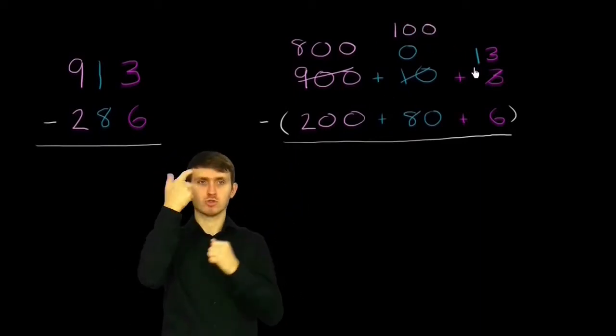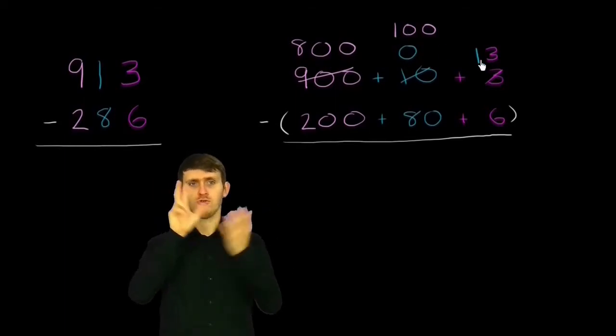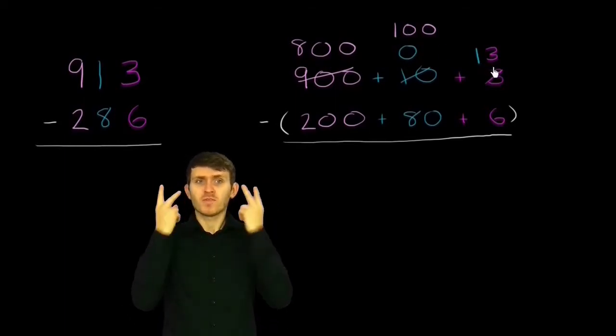Notice, this still adds up to 913. 800 plus 100 plus 13 is 913.